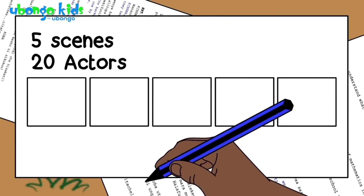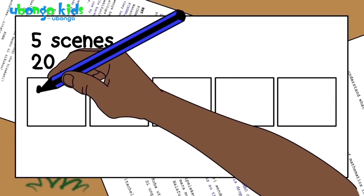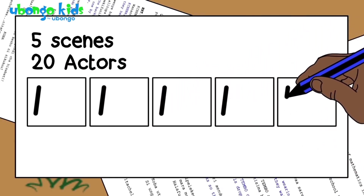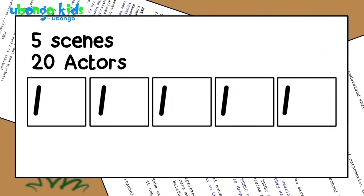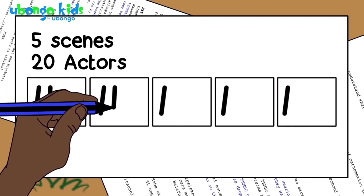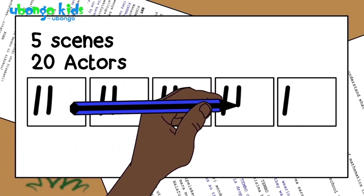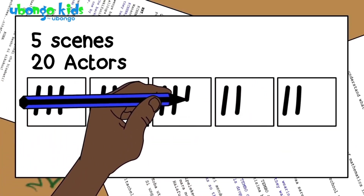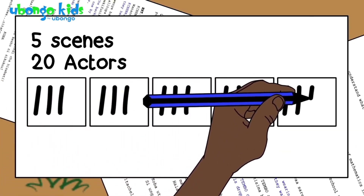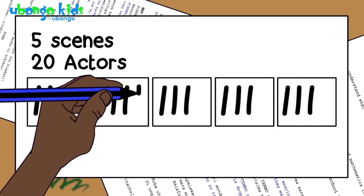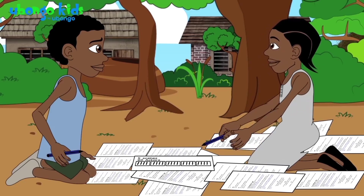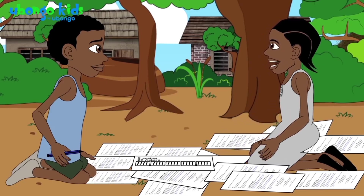Let's put them in the scenes, then. One person in the first scene, two, three, four, five. Koba, go put the rest in their scenes. Six, seven, eight, nine, ten, eleven, twelve, thirteen, fourteen, fifteen, sixteen, seventeen, eighteen, nineteen, twenty. So you need to use four actors in each scene.